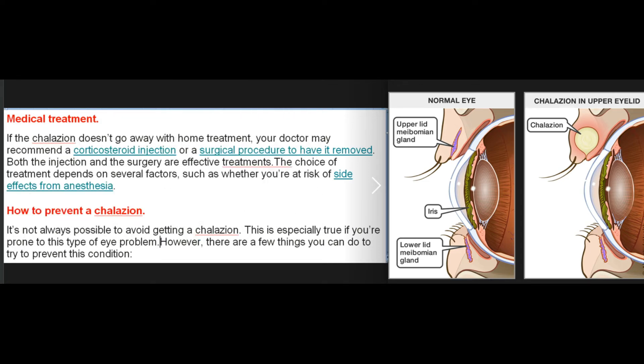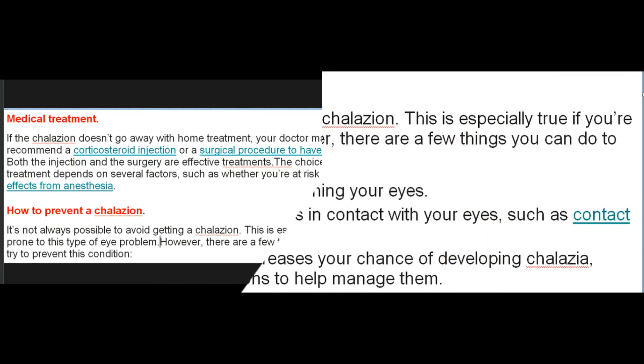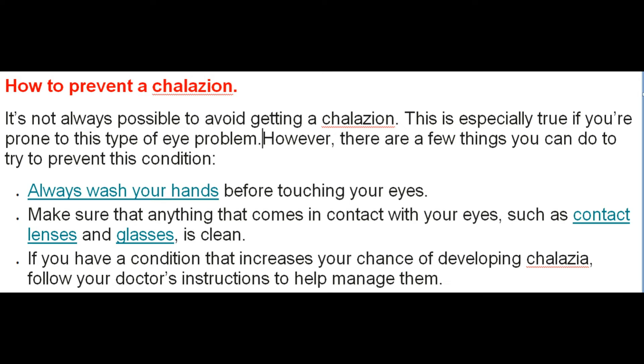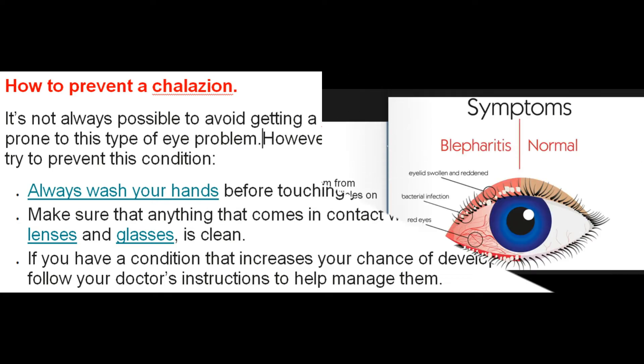Medical treatment: If the chalazion doesn't go away with home treatment, your doctor may recommend a corticosteroid injection or a surgical procedure to have it removed — both are effective treatments. The choice of treatment depends on several factors, such as whether you're at risk of side effects from anesthesia. To help prevent a chalazion: always wash your hands before touching your eyes, ensure that anything that comes in contact with your eyes such as contact lenses and glasses is clean, and if you have a condition that increases your chance of developing chalazia, follow your doctor's instructions.